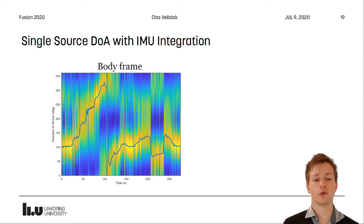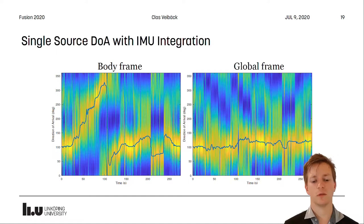We also performed IMU integration and here we have the direction of arrival estimate in body frame, and when we compensate this into global frame we obtain a rather good estimate of the direction of arrival of the source in a global frame.